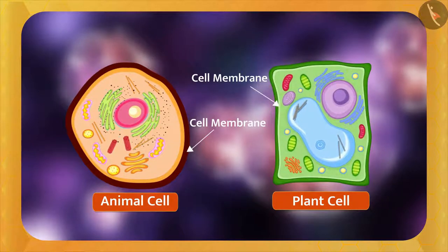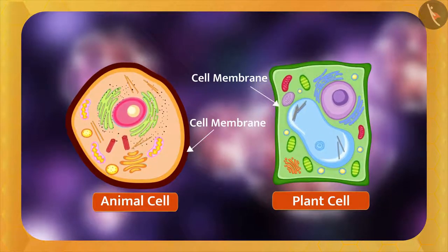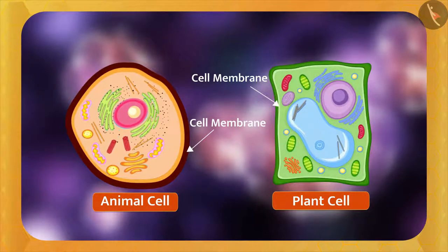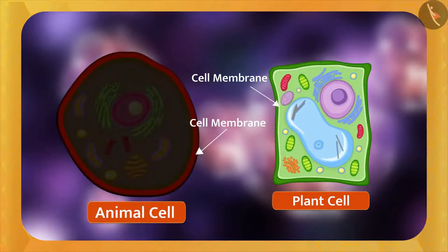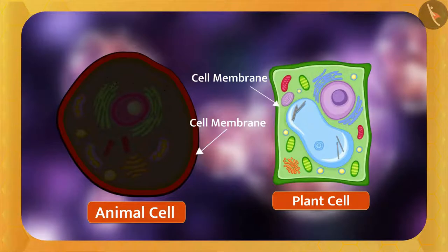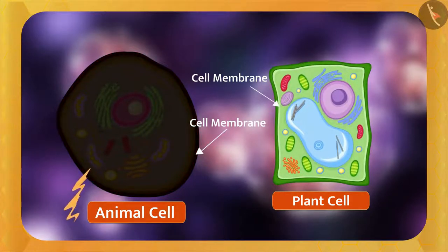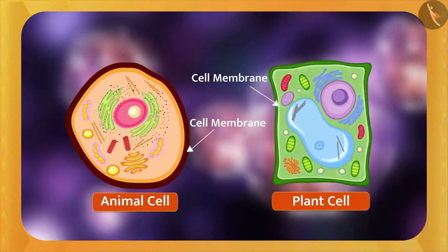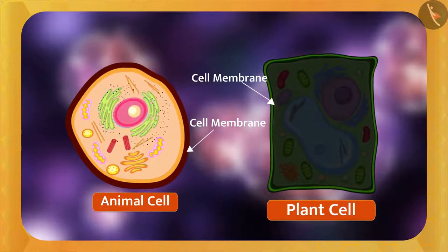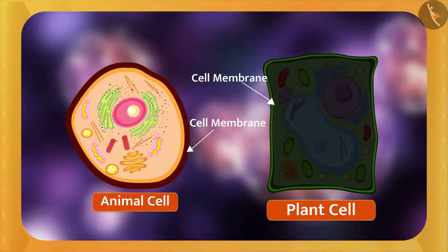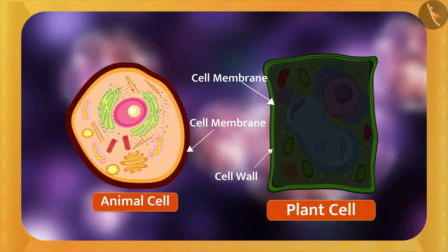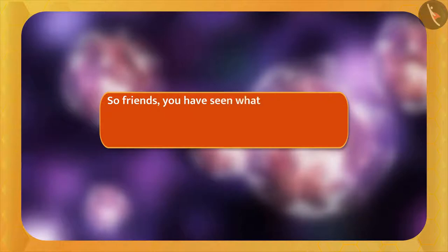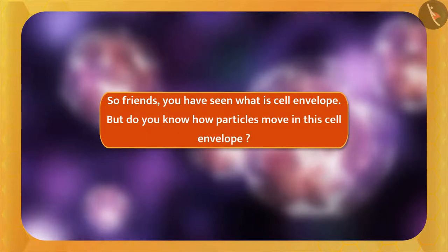Because it selectively controls what passes through, it is considered the living part of the cell. It maintains the size of the cell and protects the internal structure. If the animal cell did not have a cell membrane, everything inside would come out. In the plant cell, the cell membrane gives shape, and the cell wall around it protects both the membrane and the cell.